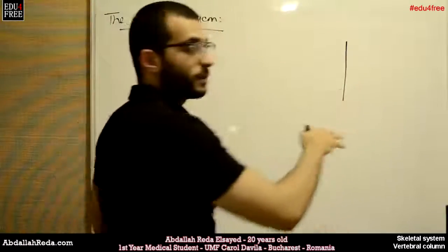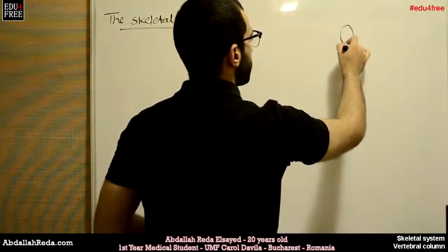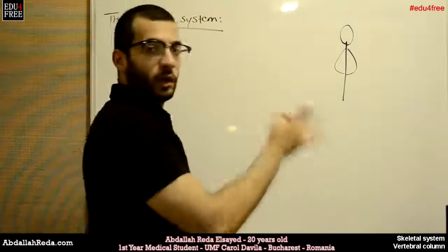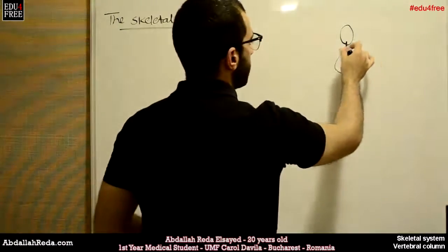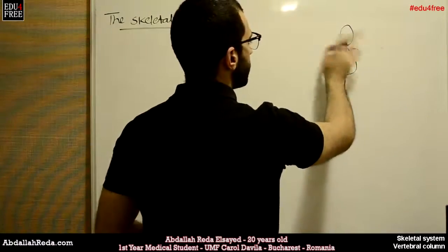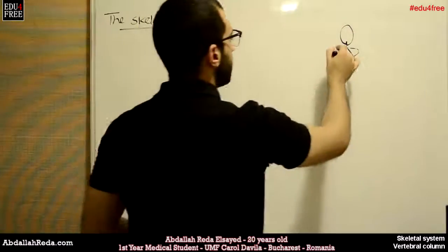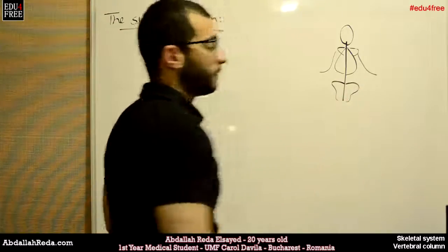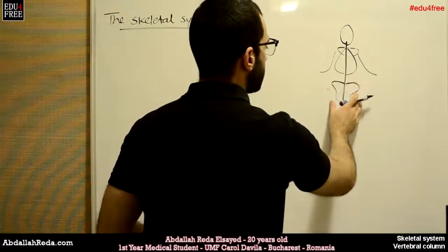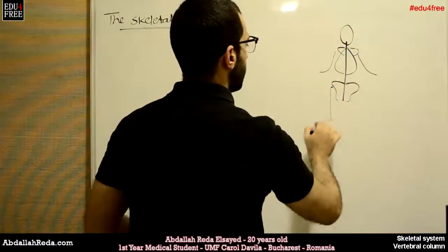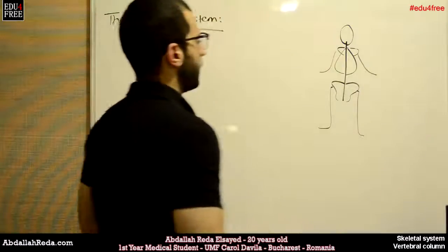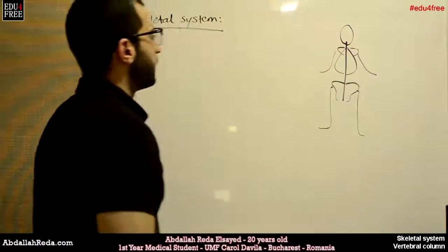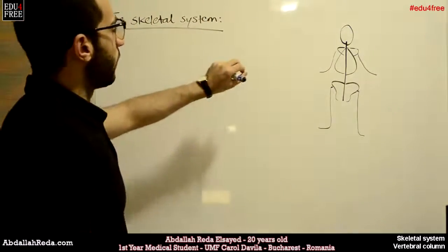This axis is the vertebral column. Here we will have the skull, around here we will have the rib cage in which the lungs and the heart are found. Here we will have the pectoral girdle, which consists of the two scapulas, and then we will have the upper limbs. Here we will have the pelvic girdle, which is the pelvis, and then we will have the lower limbs.